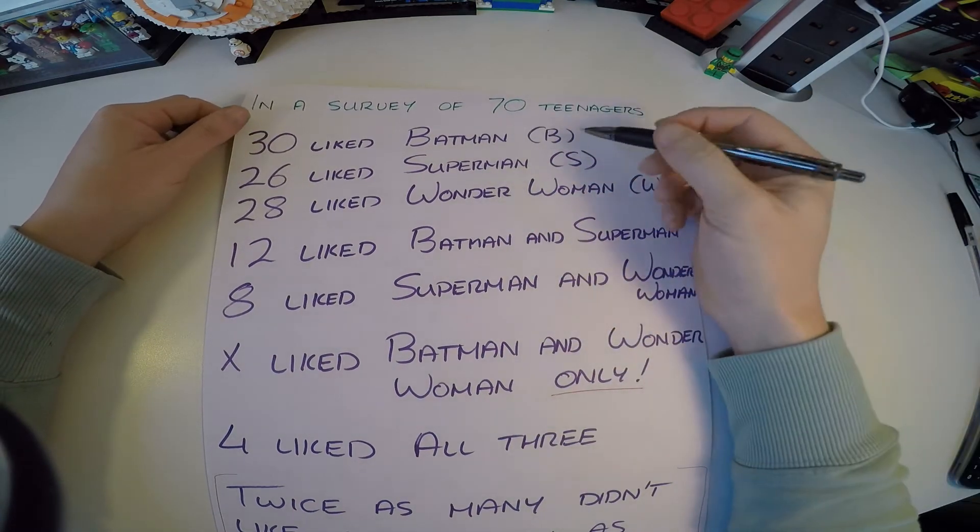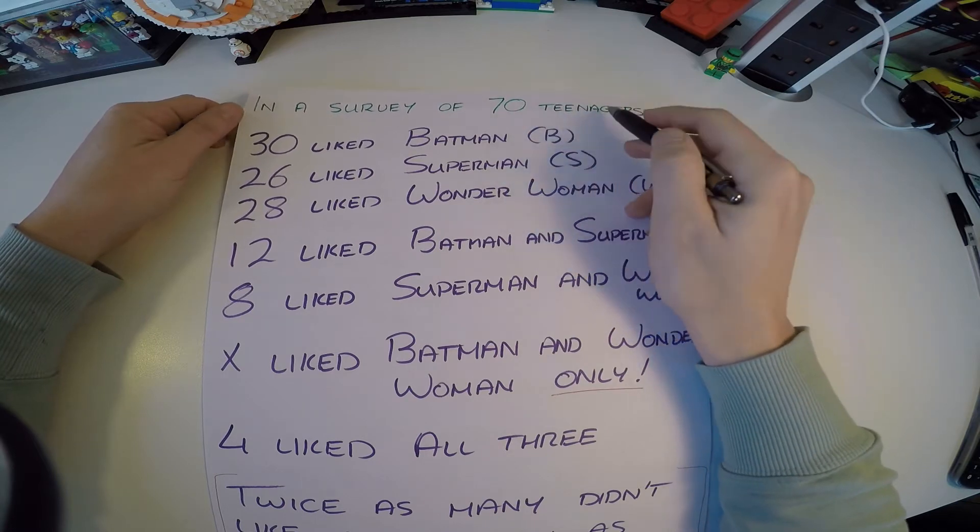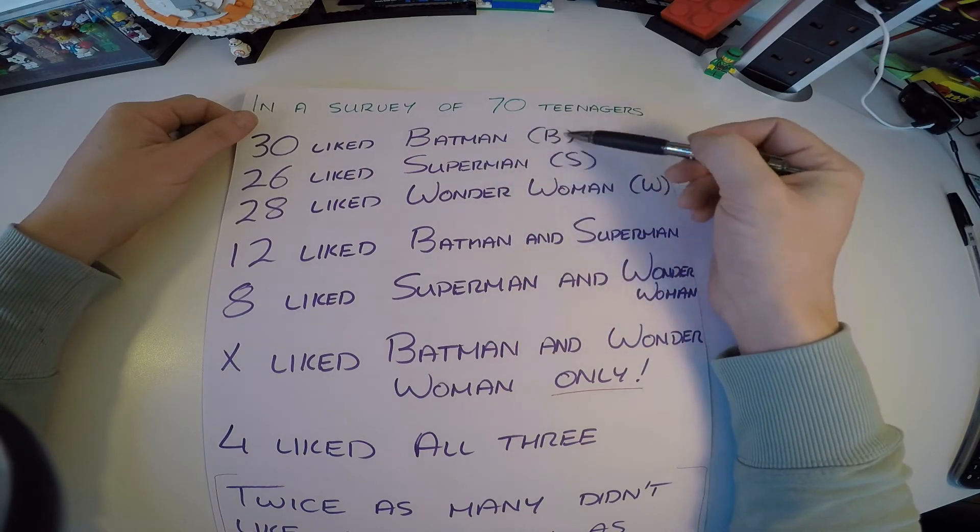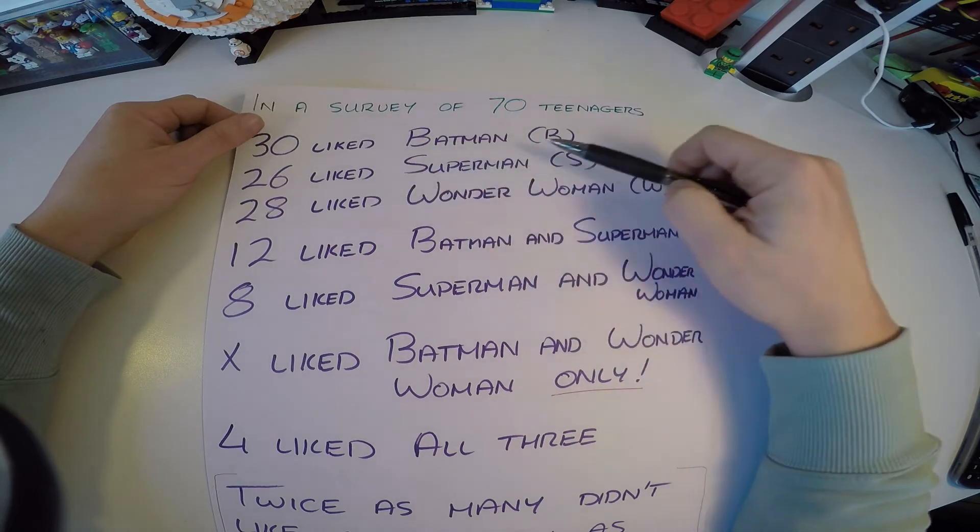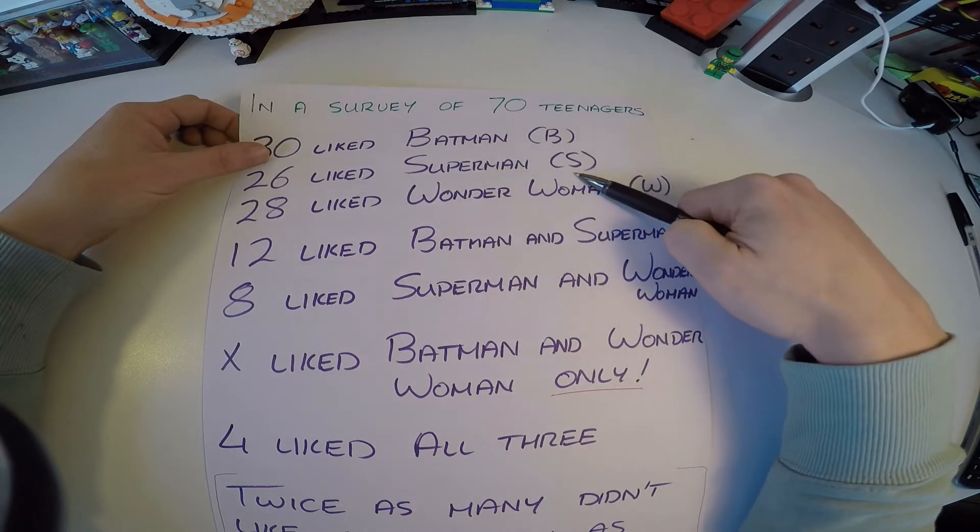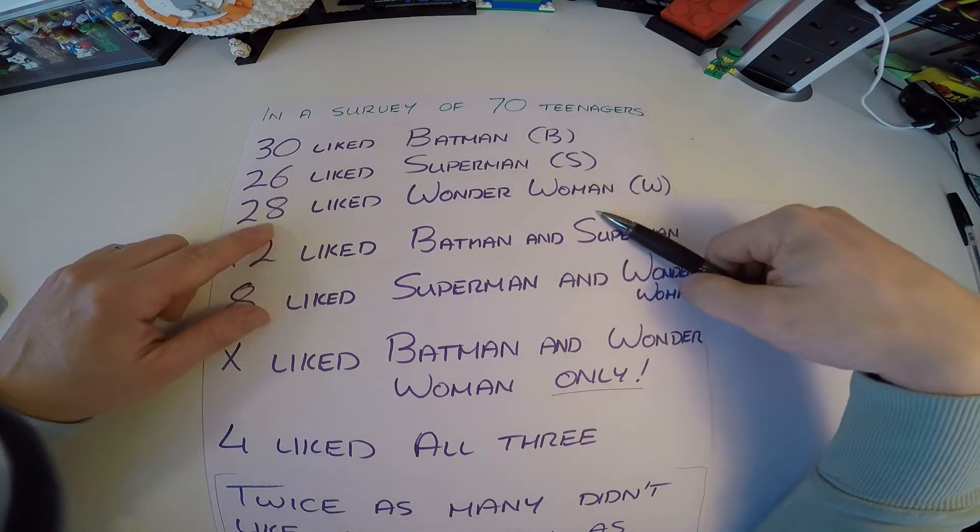This is what you're given in the question. It says that in a survey of 70 teenagers, 30 liked Batman which we denote as B, 26 like Superman which we denote as S, and 28 like Wonder Woman which we denote as W.